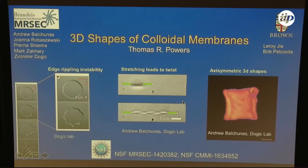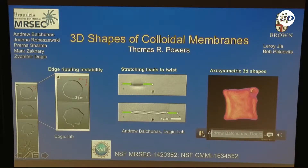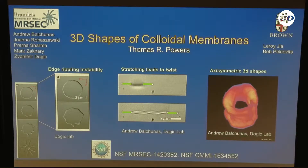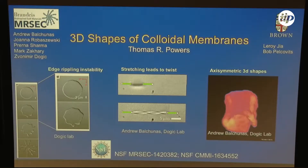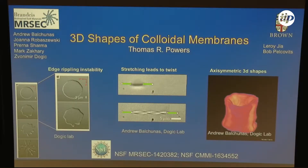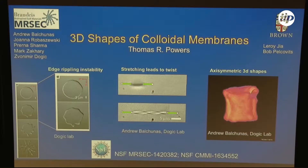This is work in progress. And finally, the last problem we'll look at is also work in progress. These are three-dimensional axisymmetric shapes that they see when they take these membranes, which are made out of rods, and dope them with smaller rods. We're going to try to develop an effective theory for this.